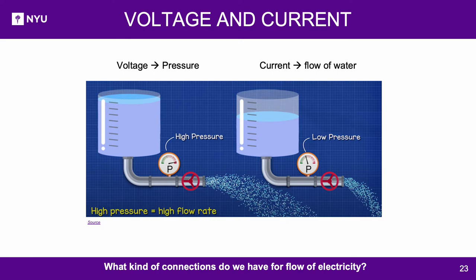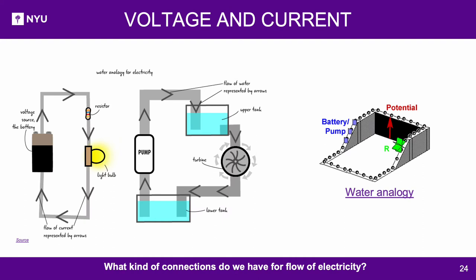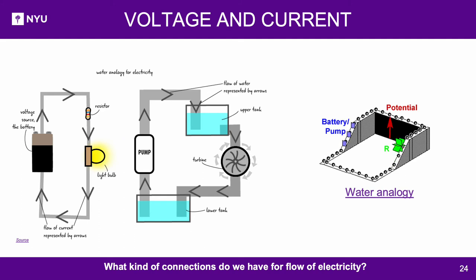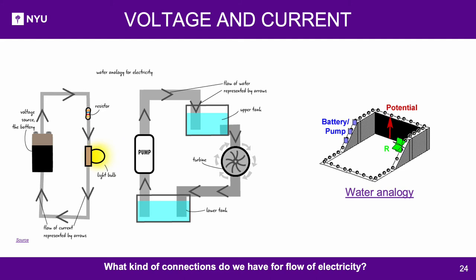Voltage and current — water analogy: Voltage is analogous to pressure and current is analogous to flow of water. The battery is analogous to a pump that increases energy of water to move it upwards. The flow of electrons is analogous to the flow of water, and the flow of electrons causing a bulb to glow is analogous to water doing work to move a turbine. The resistor restricts flow of electrons, analogous to an upper storage tank reducing water flow. Resistors in series have the same current; resistors in parallel have the same voltage.